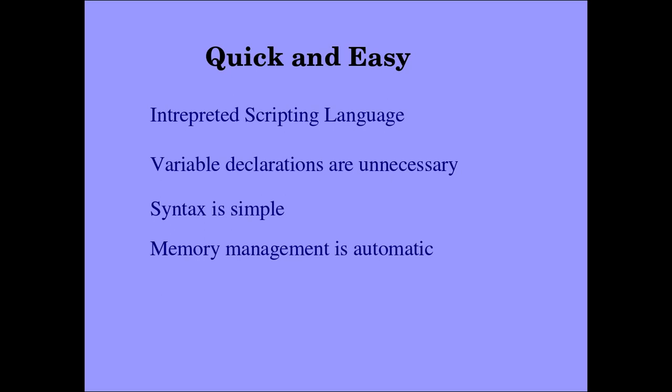As an interpreted scripting language, Python will interpret each and every line. If there is an error in the fifth line, it will stop interpreting the next line. Variable declarations are unnecessary in Python because Python knows everything.